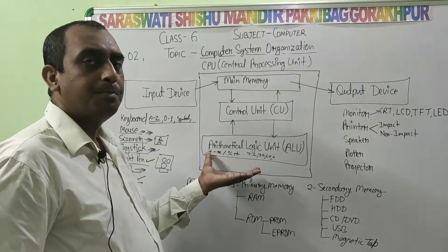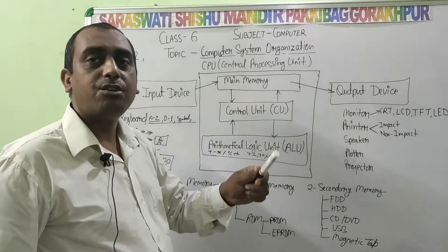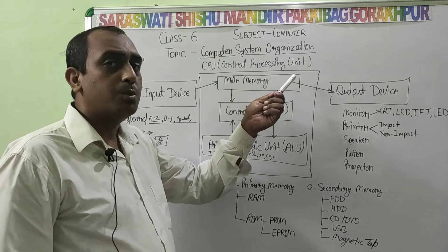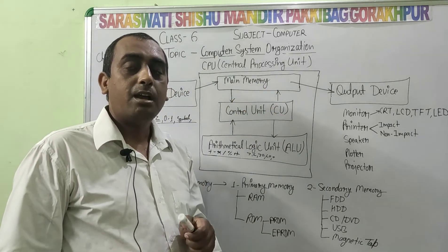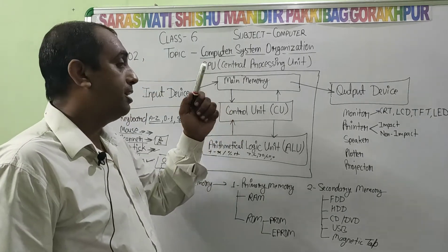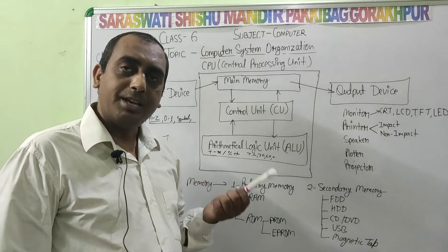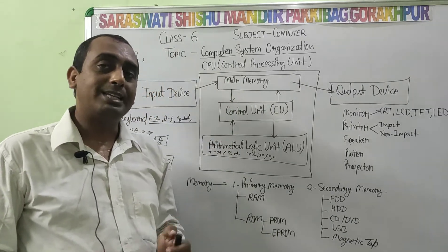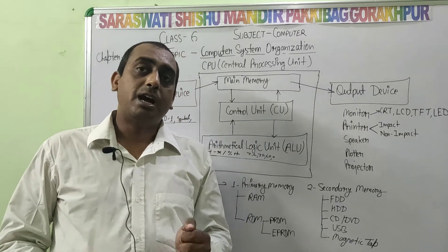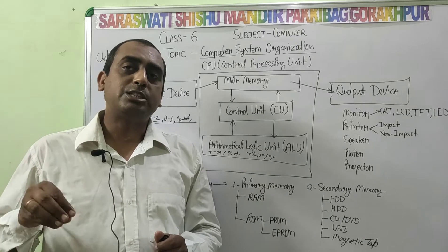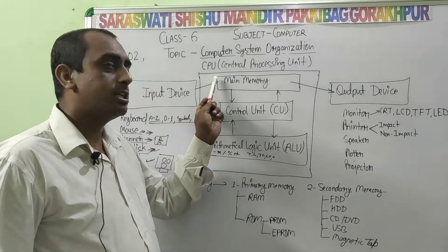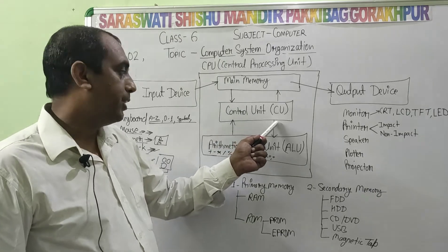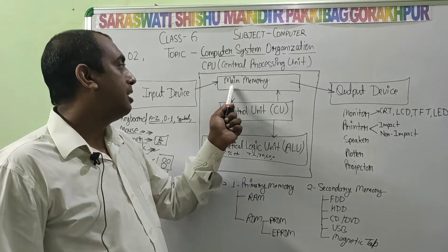The second and most important part is the CPU — Central Processing Unit. CPU is the brain of the computer, where we can take decisions, directions, and manage all hardware and software. CPU has three parts: first is the Control Unit (CU), second is the Arithmetic Logical Unit (ALU), and third is the Main Memory. Memory is used for storing data.